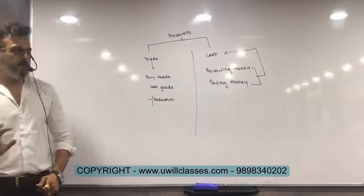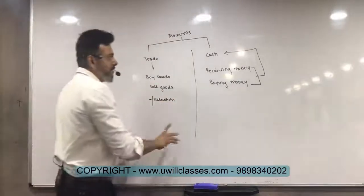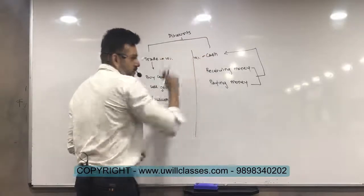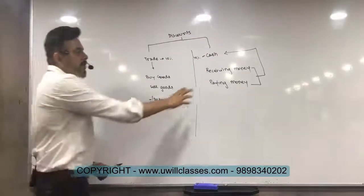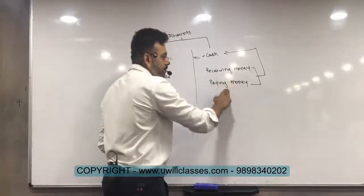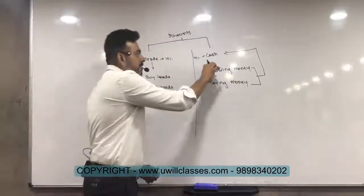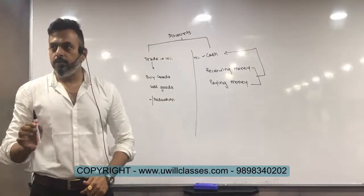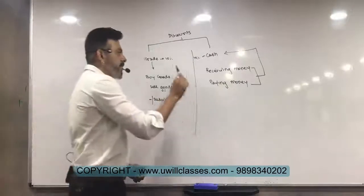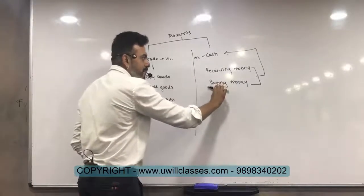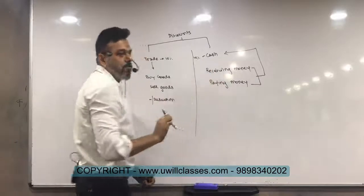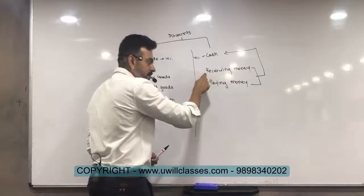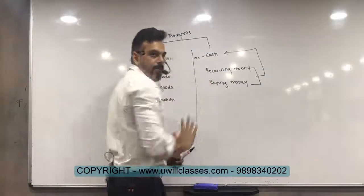Keep this in mind: even if a transaction states 10% trade discount and 10% cash discount, but no information about receiving or paying money is given, then we will not calculate cash discount. If it is given that we have received money or we have paid money, then only cash discount will come. Cash discount will be calculated on the amount which we are receiving or on the amount which we are paying.